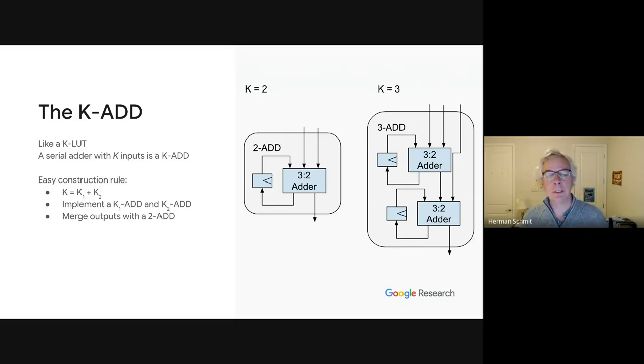We present an easy construction rule for a K-ADD. All you need to do is find two terms, we'll call them K1 and K2. You implement a K1 add and a K2 add, and then you merge their results with an additional two-input serial adder to achieve a single bit output.